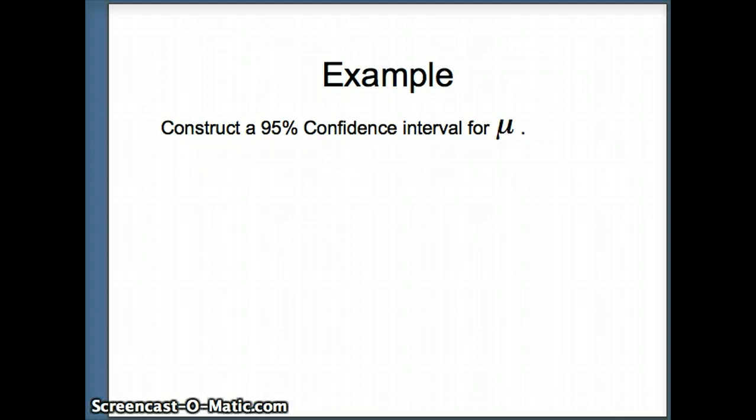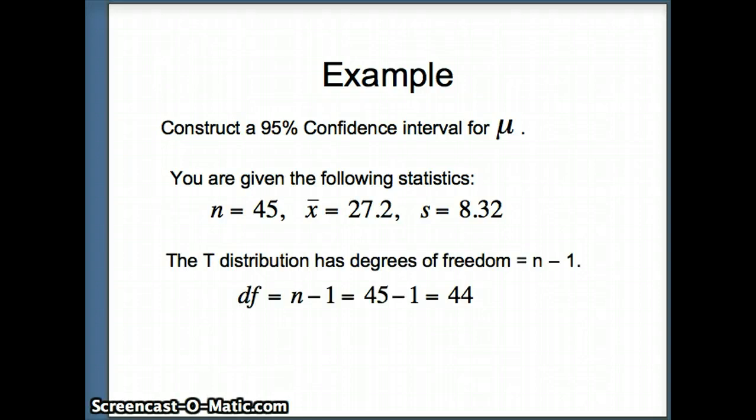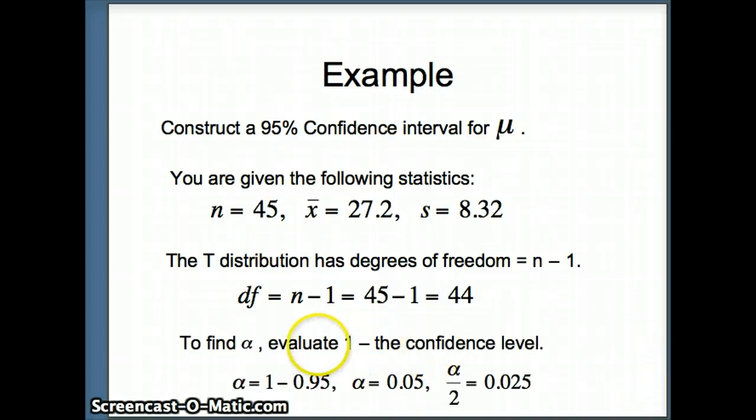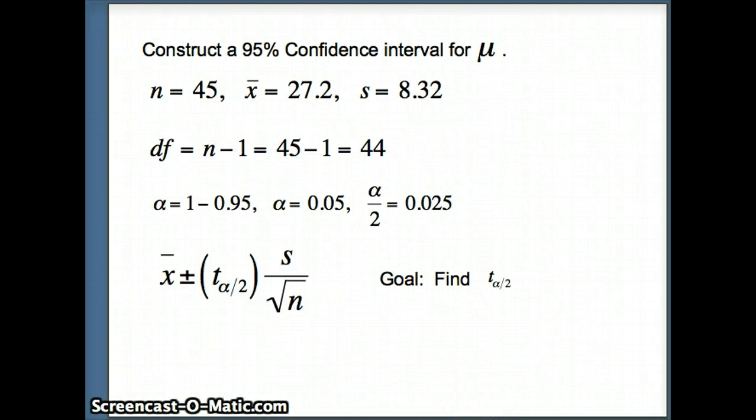So here's our example. We want to construct a 95% confidence interval for mu. And there are statistics n, x-bar, and s. And our degrees of freedom for a t, the degrees of freedom are n minus 1. So n here is 45. Our degrees of freedom will be 45 minus 1, or 44 degrees of freedom for this example. And to find alpha, we take 1 minus the confidence level. The confidence level is 95%. So alpha is 1 minus .95 or .05. But you'll recall we need alpha divided by 2. So alpha divided by 2 is .025.